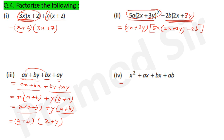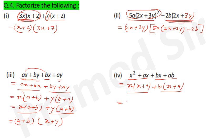Question 4: x² + ax + bx + ab. Group as (x²+ax) + (bx+ab). Take x common: x(x+a); take b common: b(x+a). Now (x+a) is matching, take it common: (x+a)(x+b).